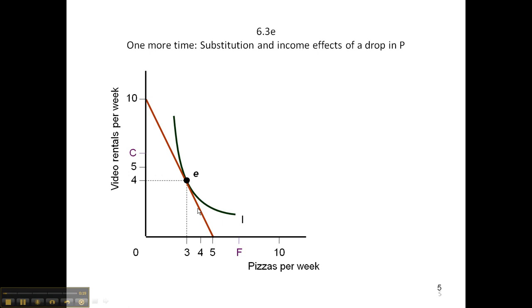Next, let's rotate out the budget line by decreasing the price of pizzas so we can buy more pizza. What happens now is that we're at a higher indifference curve, E-star.